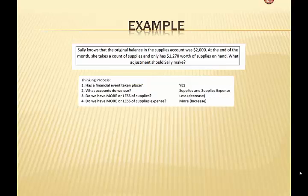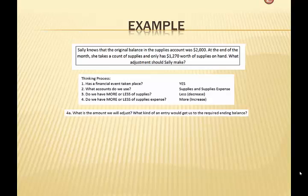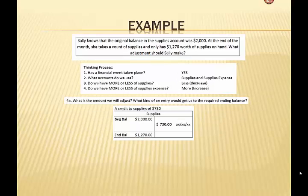Let's walk through our thinking process again, because the thinking process is always the same. Has a financial event taken place? Yes, it has. What accounts are we going to use? All of this has to do with supplies and supplies expense. Do we have more or less of supplies? We now have less — we began with $2,000, we now have $1,270. And do we have more or less of supplies expense? We have more expense. What is the amount that we're going to have to adjust? The difference between the $2,000 original balance and the required ending balance of $1,270 means we will have to credit that account for $730.